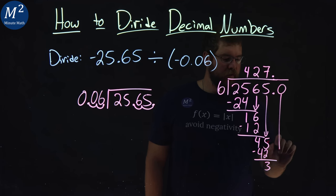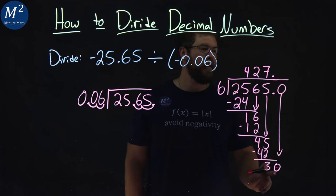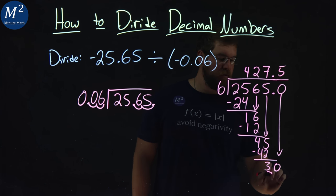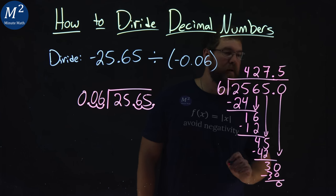So let's add a place value here. Put a 0. Bring that all the way down. Can 6 go into 30? Yes. Exactly 5 times. Remember the decimal place here. 5 times 6 is 30. Subtract. Get a 0.